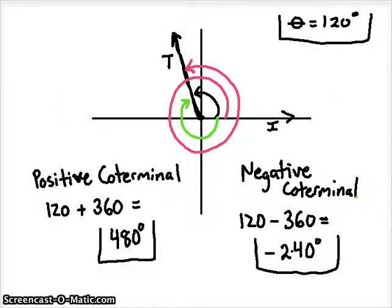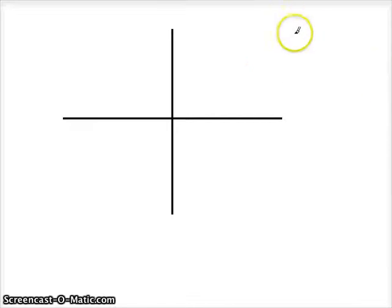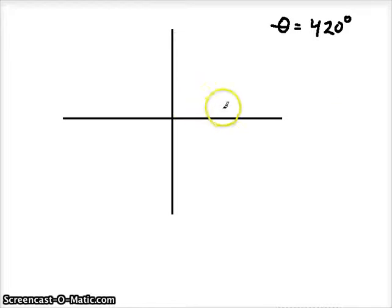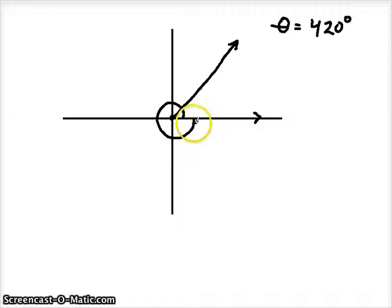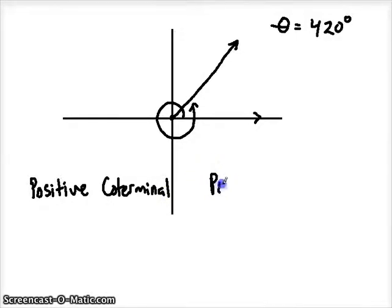Let's see what happens when we make it more complicated — let's say we start with an angle already over 360 degrees: an initial angle of 420 degrees. I'll draw our initial ray in standard position, do a full rotation of 360 degrees, then add an additional 60 degrees to get to 420 degrees. If I want to find the positive and negative coterminals, I make sure the angle starts and stops at the same spot and figure it out numerically and graphically.